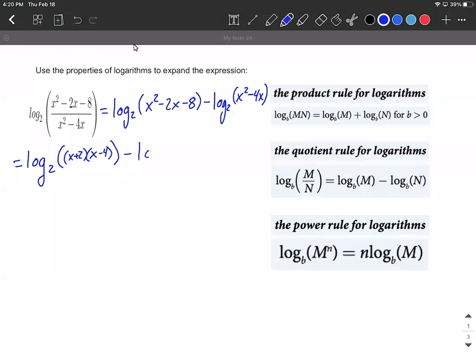From that, we're supposed to subtract off log base 2, and again, big set of parentheses. I think we can factor x squared minus 4x. Those have a common factor of x. So let's factor that out. That'll leave us with x minus 4 inside this set of parentheses.